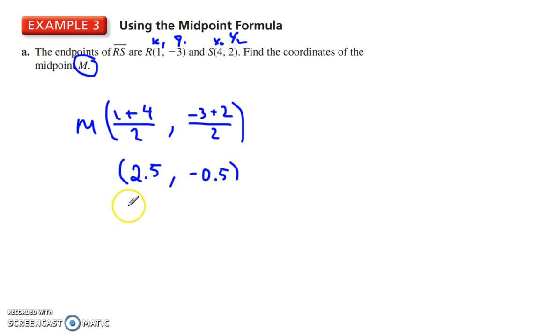Or, if you have it as fractions, we've got 5 over 2, and negative 1.5. There we go.